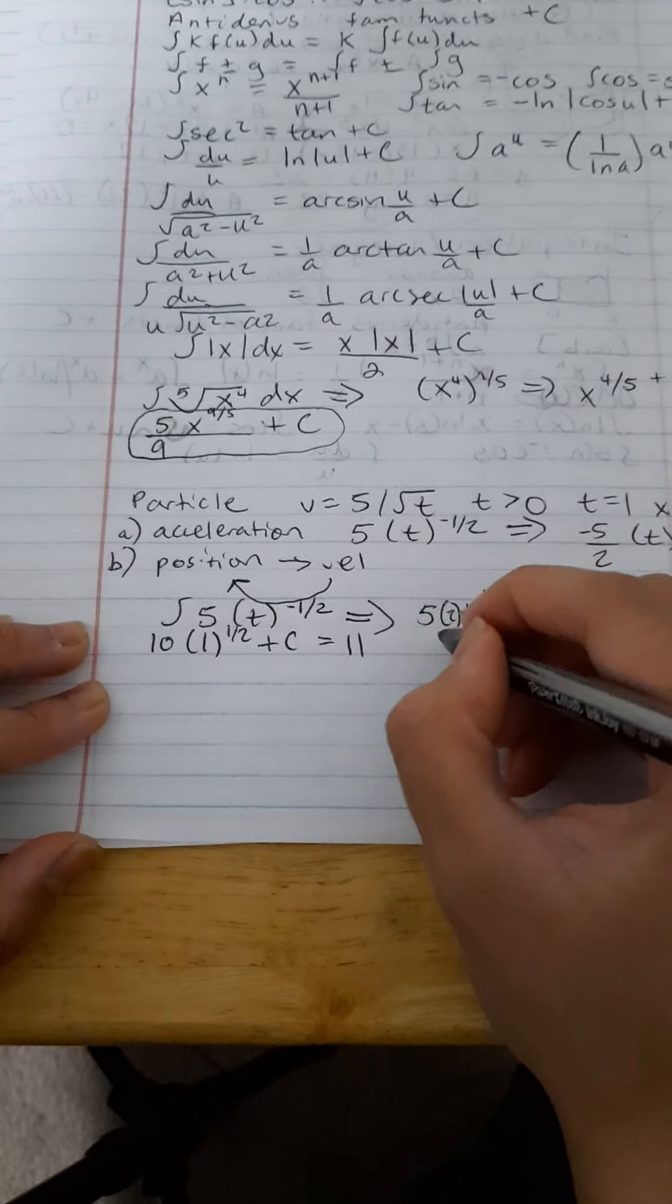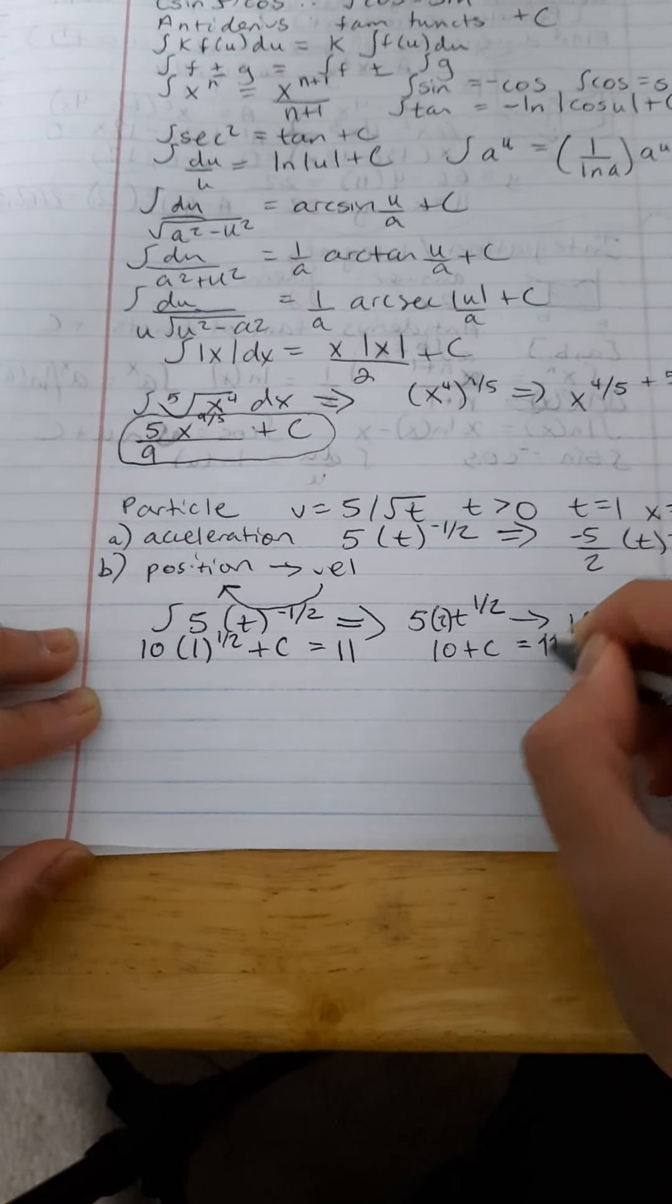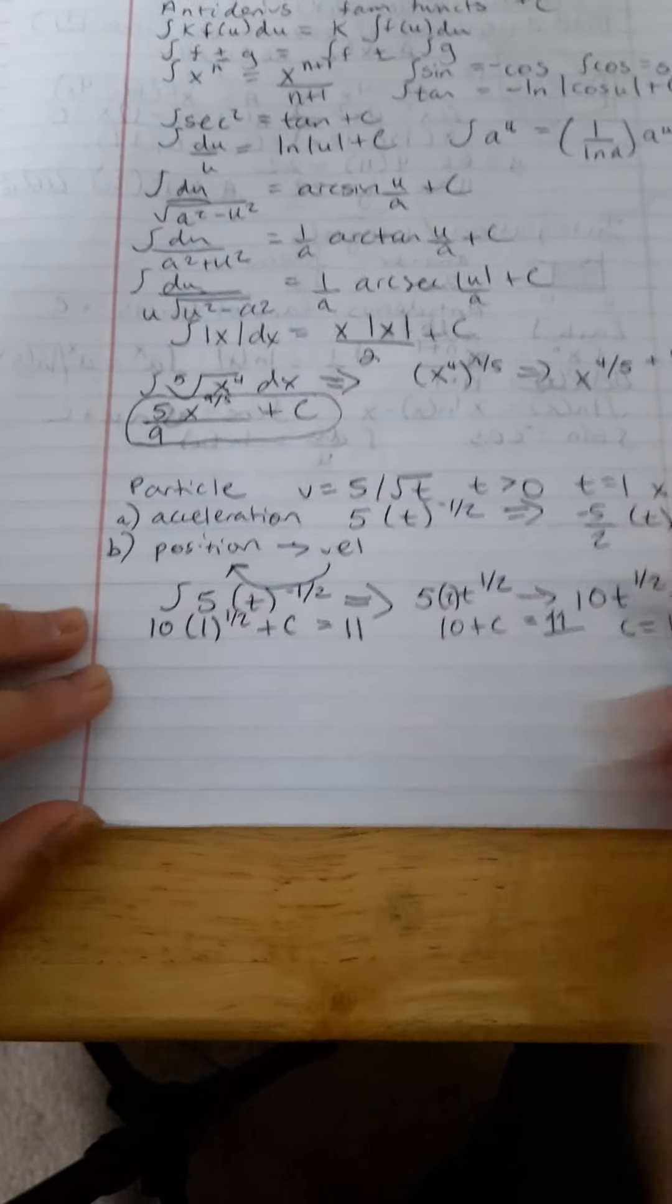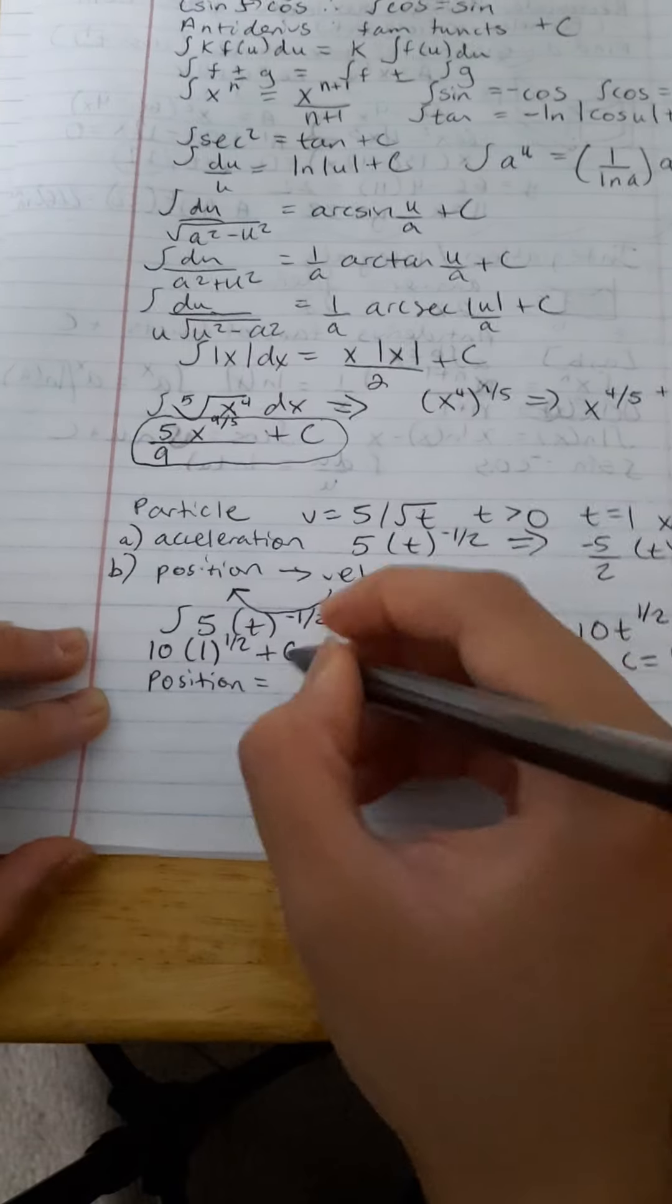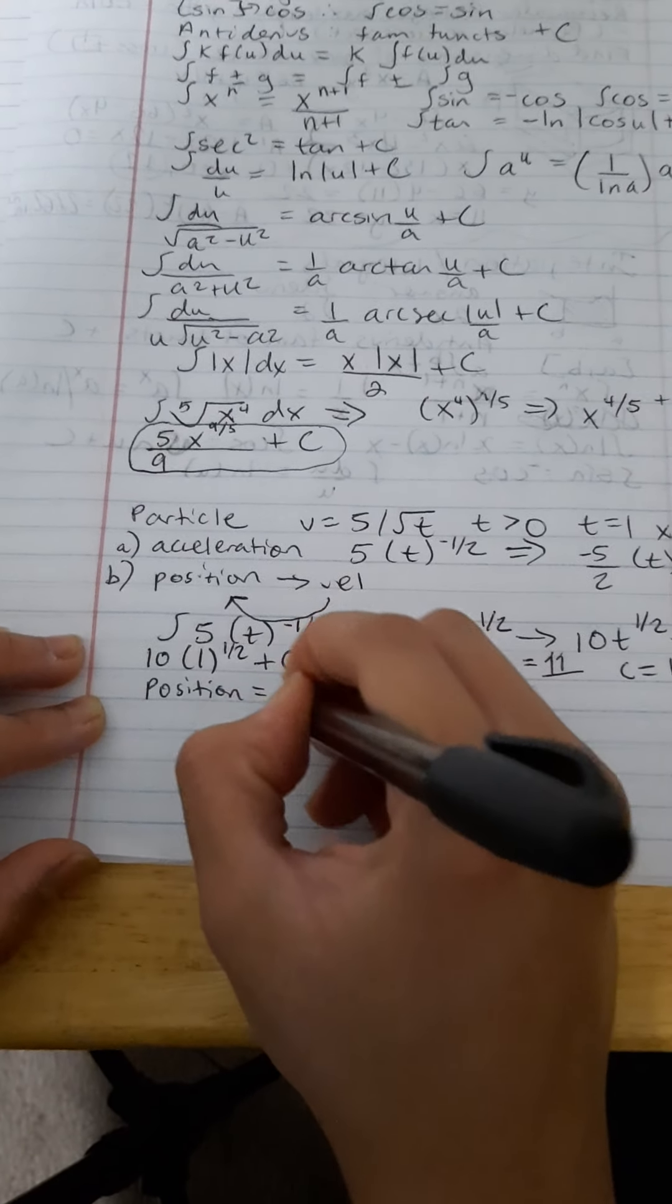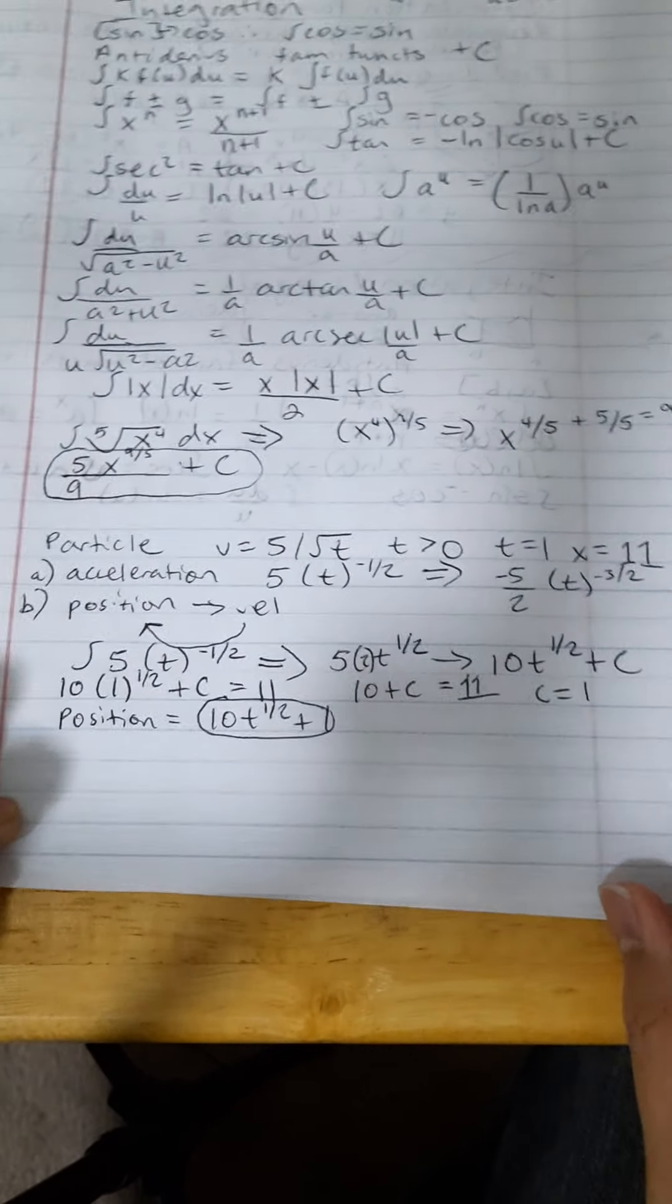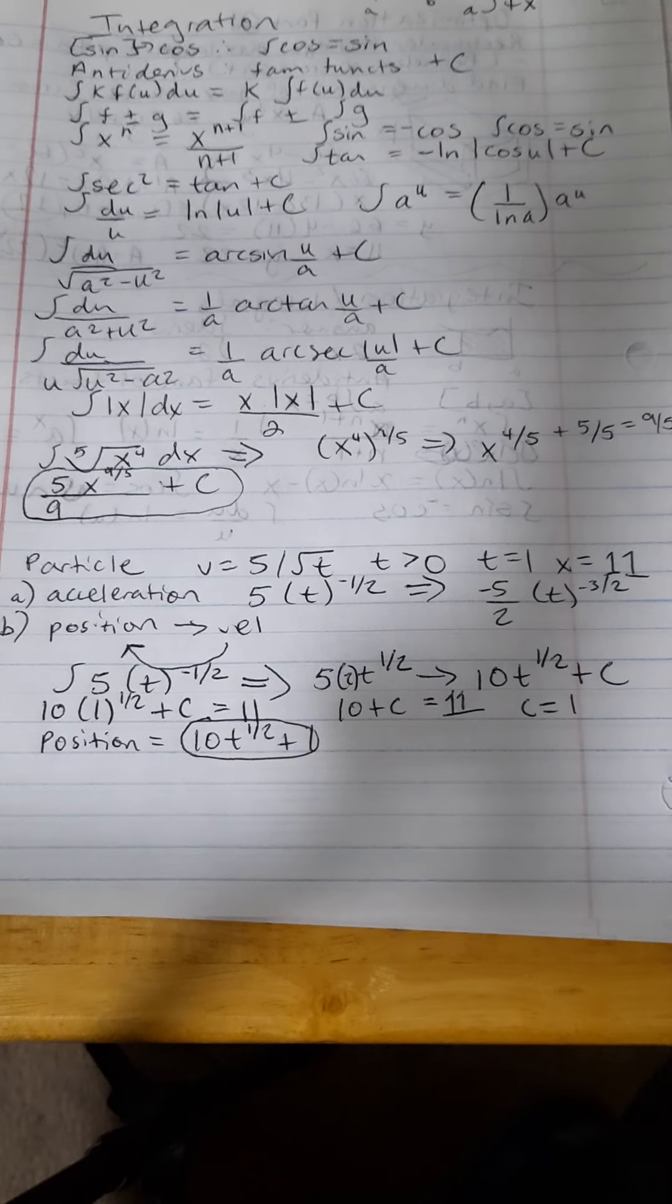so 10, 1 times 1 to the 1/2 power plus c will equal our 11. When we do this, we get 10 plus c is equal to 11, so that must mean c is equal to 1. Therefore, our position would equal 10t to the 1/2 plus 1. So,